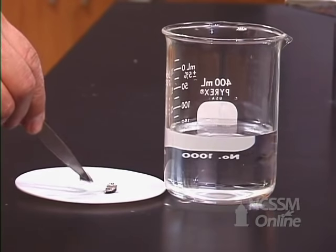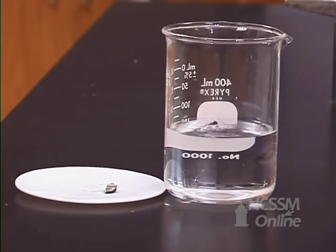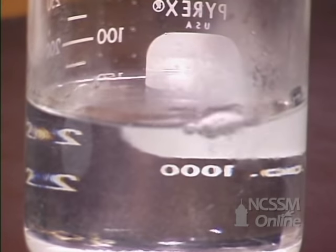If we add a piece of lithium to the water, one of the things that we notice is the fact that the lithium floats. Group 1 metals are less dense than water. We also see that the lithium reacts very rapidly with the water.